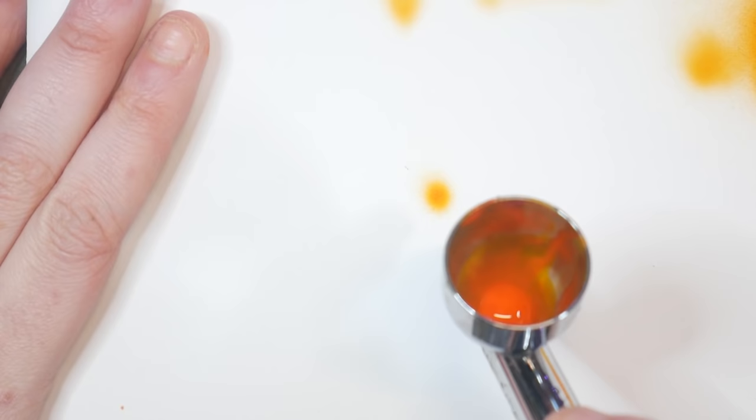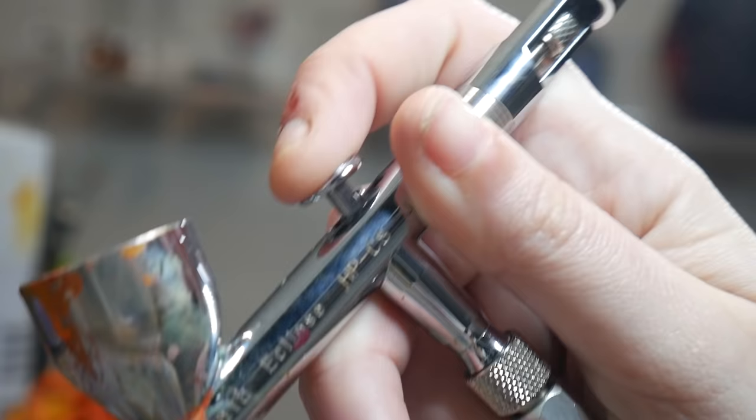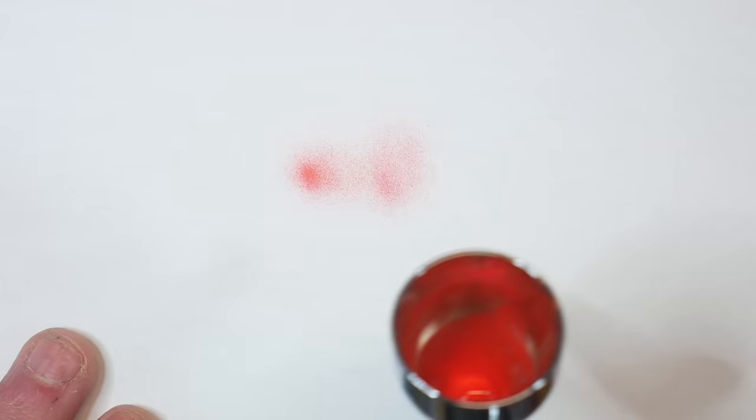But how do I know when it's right? We want there to be an even application of paint with very small particles. If the paint runs or spiderwebs, your PSI is too high, you're pulling the trigger too far back, or you're too close. If it looks chalky or dusty, your PSI is too high. If it sprays with large droplets of paint, your PSI is too low.